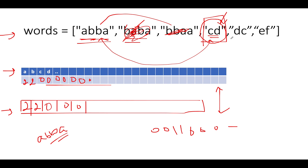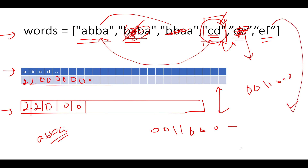The next string after 'cd' is 'dc'. Its anagram string is also [0, 0, 1, 1, 0, ...], the same as 'cd', so 'dc' gets deleted since it's at the higher index. Then we look at 'ef'. Its anagram string is different from 'cd', so since they differ, we add 'cd' into our answer set.